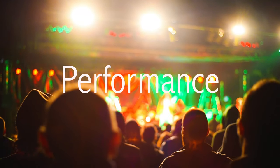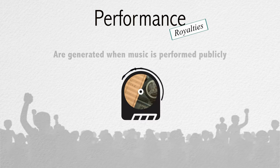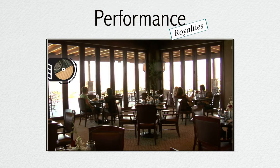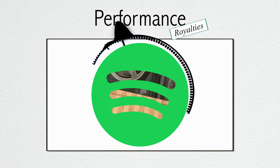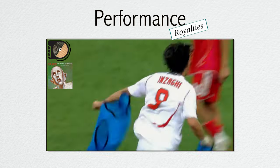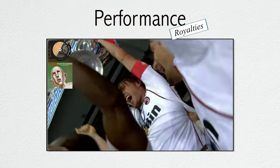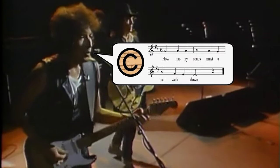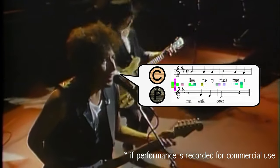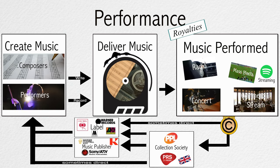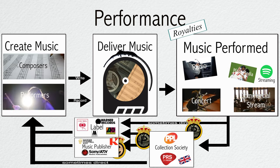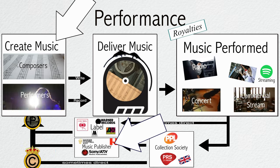Performance royalties are generated from the fees users pay when music is performed publicly. This can be music played over the radio, in a restaurant or bar, over a service like Spotify, an artist performing a composition live at a theater, or "We Are The Champions" being blasted at the end of a sporting event. Interesting to note that in a live example, only the copyright of the work is being exploited, as the performer is creating a new sound recording on the spot. These royalties are collected for both the copyright and the sound recording by their respective collection societies, and redistributed to the writers and artists via their publishers and labels.